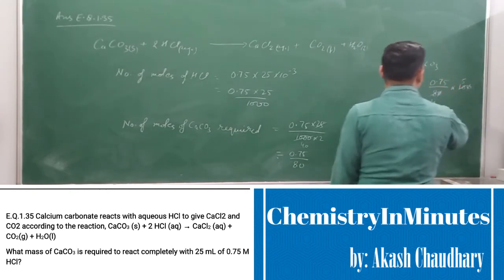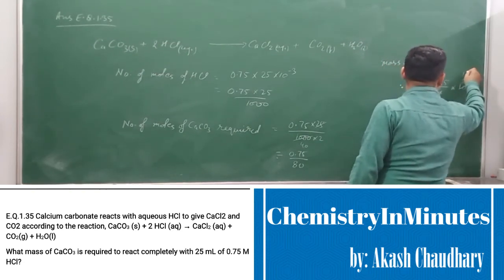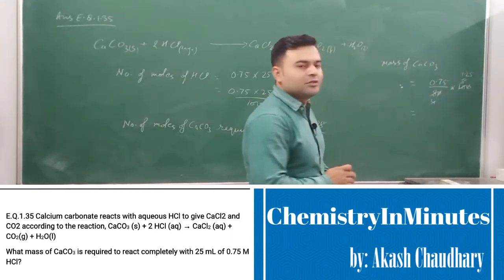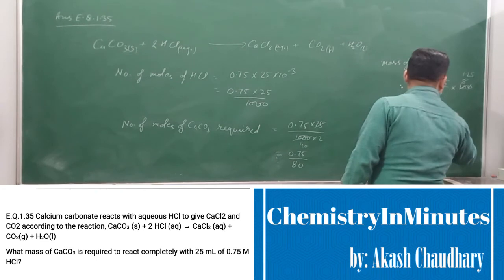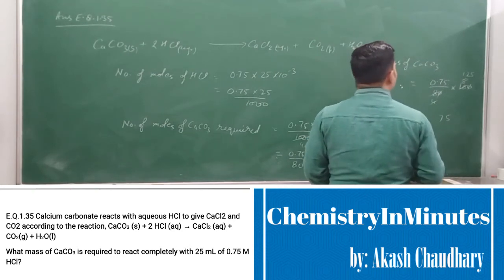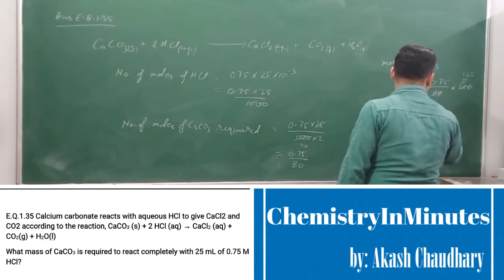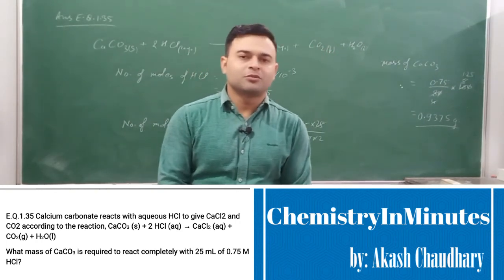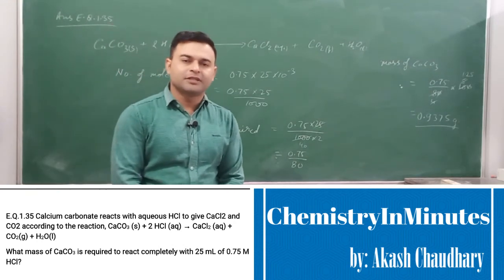Canceling the zeros and simplifying 100/80 as 1.25, we get 0.75 × 1.25. Multiplying, we get 0.9375 grams. This much mass of CaCO3 is required to react completely with 25 mL of 0.75 M HCl solution.